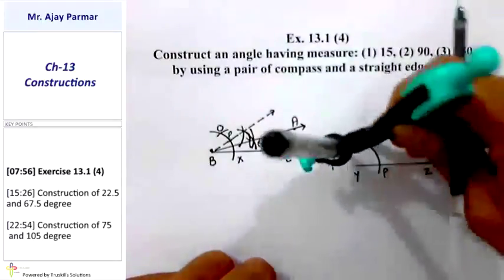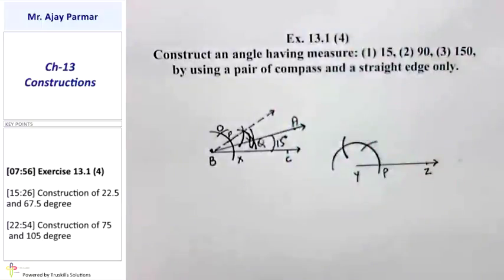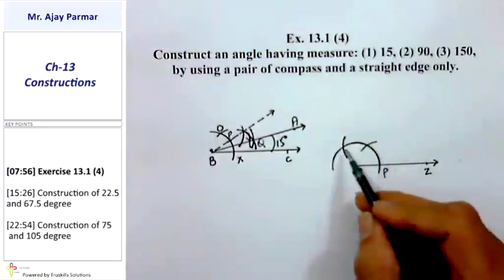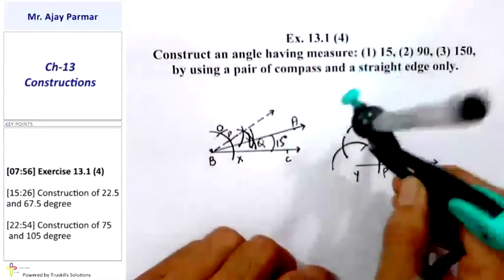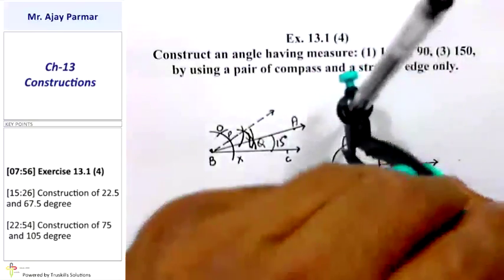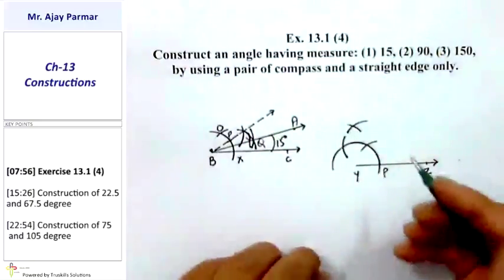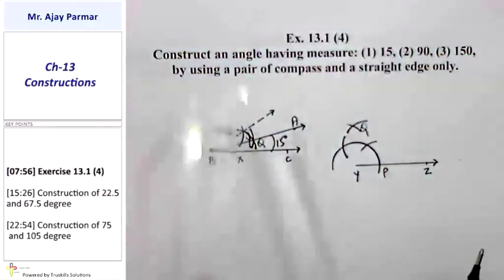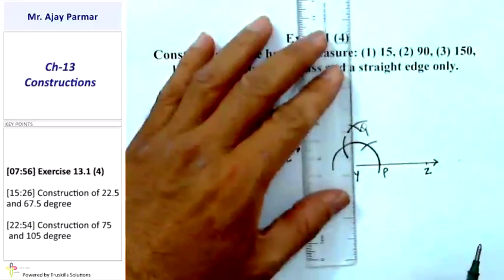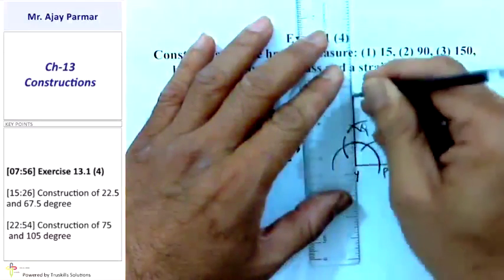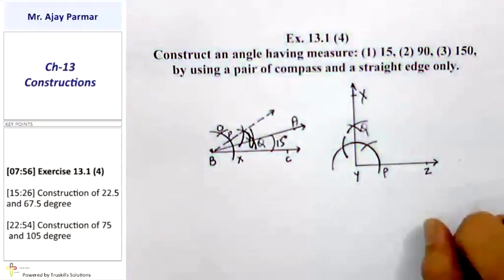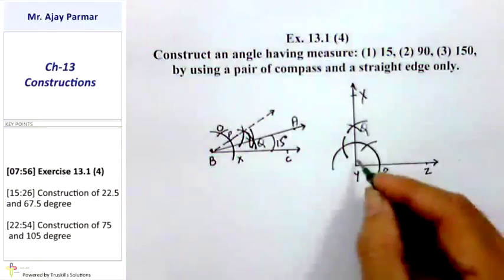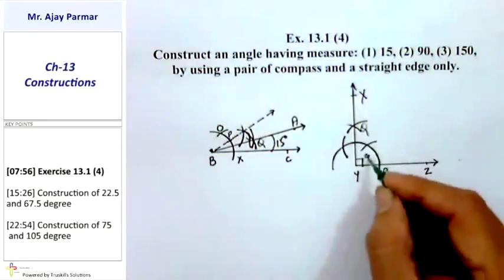The bisector between the 60° point and the 120° point will give us 90°. Taking an arc with 60° as center and another with 120° as center, they intersect at point Q. Drawing ray YQ gives us 90°. So ray YX passing through point Q gives angle XYZ of measure 90°.